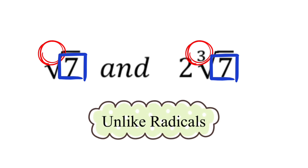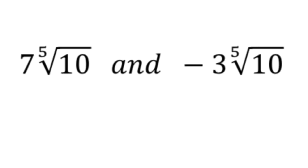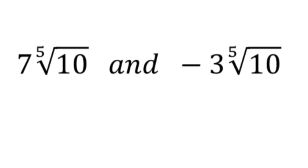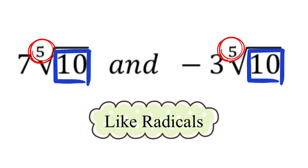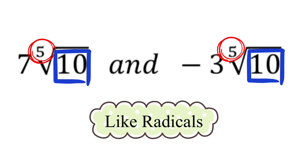Now let's move on to the next example. In this case, both indices are 5 so they're the same, and both radicands are 10, so we can go ahead and say that these two are like radicals.